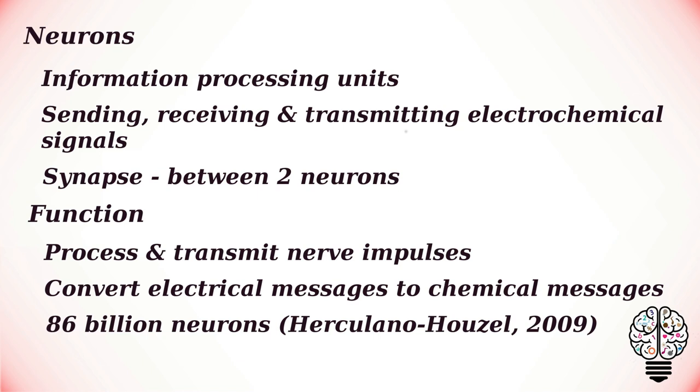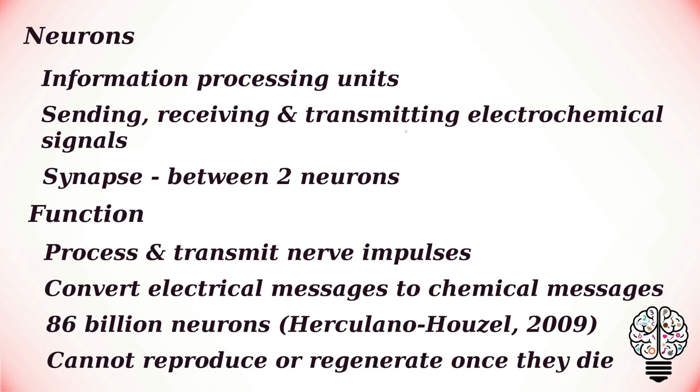According to research in 2009, the human brain contains around 86 billion neurons. These cells develop fully around the time of birth, but unlike other cells, cannot reproduce or regenerate once they die. The neuron contains the soma, which is the cell body, from which extends the axon — a nerve fiber conducting electrical impulses away from the soma — and dendrites, which are tree-like structures that receive signals from other neurons.